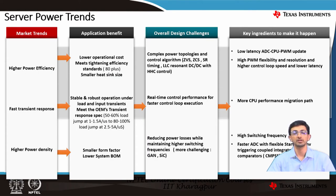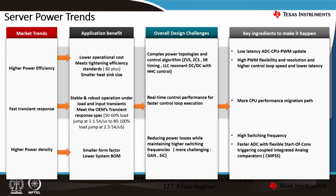Moving on to server power trends — the market trends demand higher power efficiency, fast transient response, and higher power density. Higher power efficiency provides lower operation costs, meets tightening efficiency standards (greater than 80%), and results in lower power loss, meaning a smaller heat sink is needed. Fast transient response enables stable and robust operation under load as well as input transients, and meets OEM transient response specs. Higher power density delivers a smaller form factor with a lower system BOM.